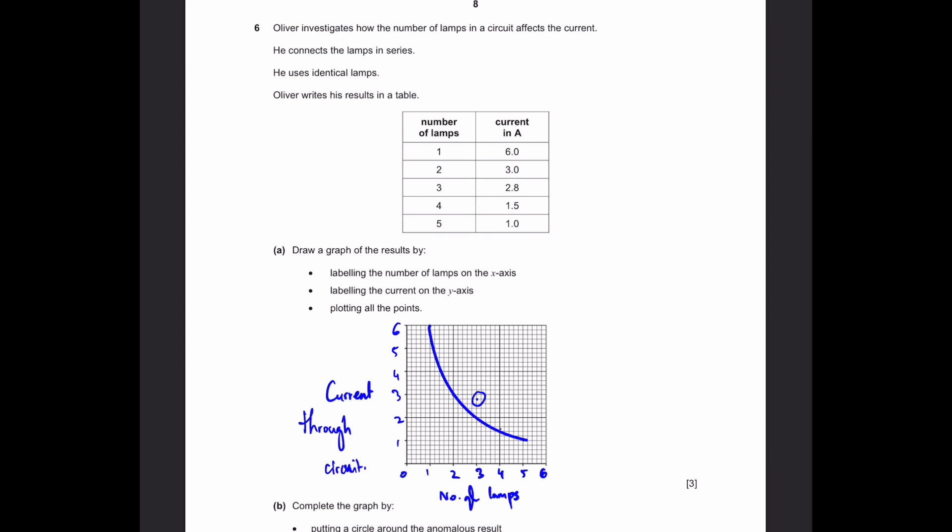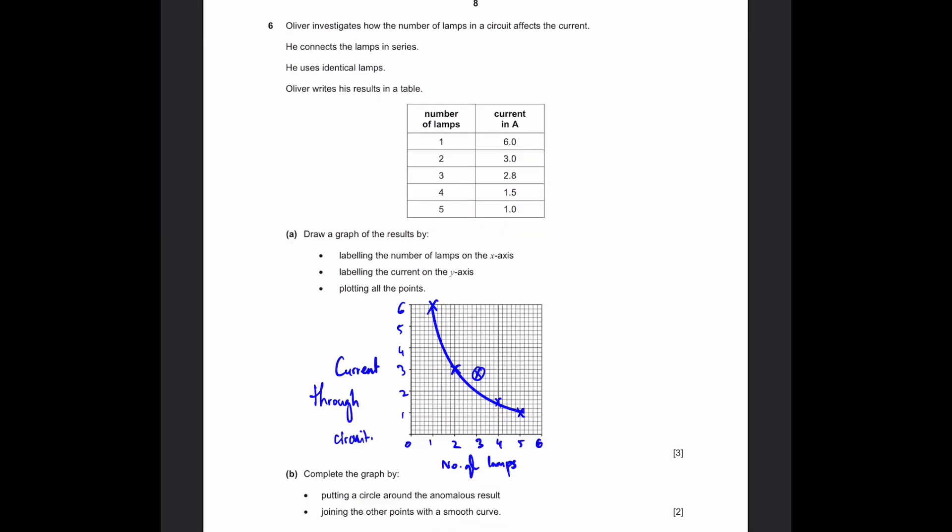Question 6. Oliver investigates how the number of lamps in a circuit affects the current. He connects the lamps in series. He uses identical lamps. Oliver writes his results in a table. Draw the graph of the results by labeling the number of lamps on the x-axis, which is done here. Labeling the current on the y-axis, over here. Plotting all the points. Actually, over here, I will just mark the points a bit clearer. This is 1 and 6.0, 2 and 3.0 is here, 3 and 2.8 is over here, 4 and 1.5 is over here, and 5 and 1.0 is over here.